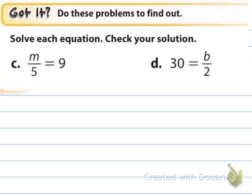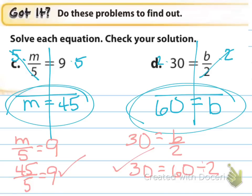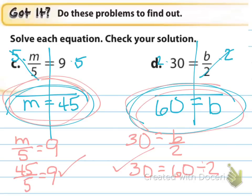All right, now also do C and D, and we'll come back and I'll show you the answers. And here are the answers for C and D: M equals 45, and B equals 60. And you see that I showed my work, I checked my work, and I circled my answers, which are 45 and 60.